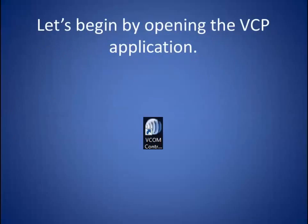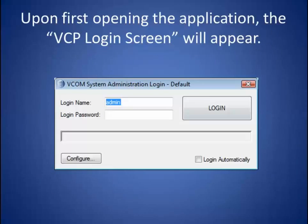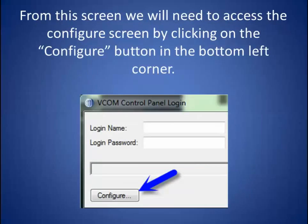Let's begin by opening the VCP application. Upon first opening the application, the VCP login screen will appear. From this screen, we will need to access the configure screen by clicking on the configure button in the bottom left corner.